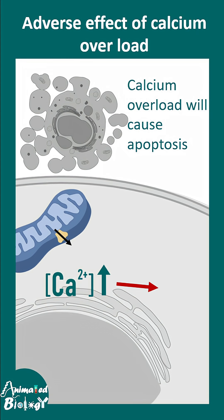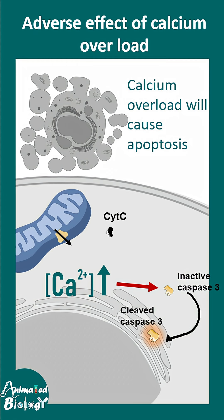Too much calcium activates proteases which can cleave inactive caspase-3 to active caspase-3. This active caspase-3 can ultimately lead to the destruction of the cell. Generally, cytochrome C — also released when the mitochondrial membrane is leaky — leads to generation of molecules that ultimately cleave caspase-3, the executor caspase.